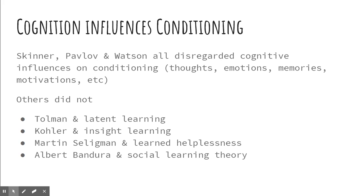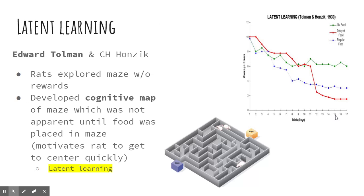Cognitive versions of learning have been theorized in modern times with help of things like PET scans and EEGs, but also even before that. Latent learning is just this understanding that we pick up things all the time without any rewards, without any form of reinforcer, without any form of stimulus. We just learn things.